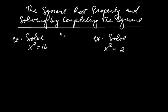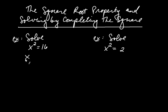Here we're going to talk about what's called the square root property and solving by completing the square. Let's start off with an example. Let's say we're asked to solve x squared is equal to 16. Well, can you think of two numbers that you square to get 16? X would be positive 4 is one number, and another number would be negative 4.